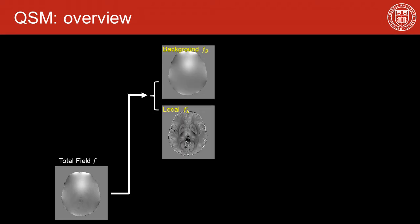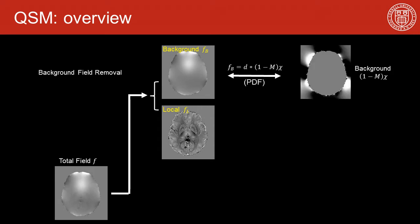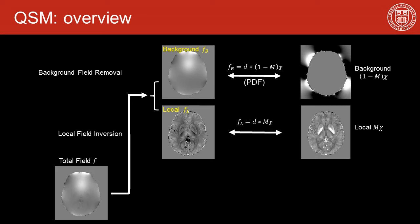An essential step in QSM is to solve the inverse problem for a spatial distribution of the susceptibility from the field input. Suppose we have the total field — what we usually do is to first separate the major component, which is the background field, from the local tissue field. The background field can be modeled as the field generated by sources outside the ROI, and after removing that field, we can invert the tissue susceptibility from the local field only.